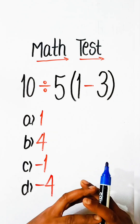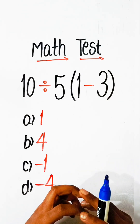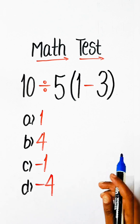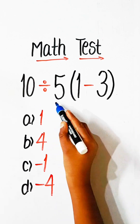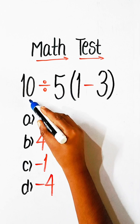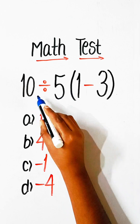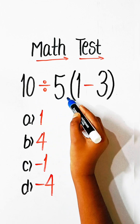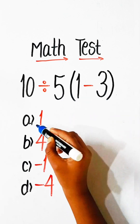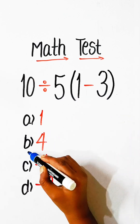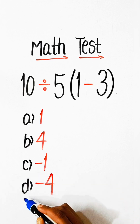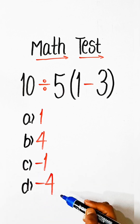Hello everyone, welcome back to my YouTube channel. In this video we will try to solve this math equation: 10 divided by 5 under bracket, 1 minus 3, equals to what? Option A: 1, Option B: 4, Option C: minus 1, Option D: minus 4.